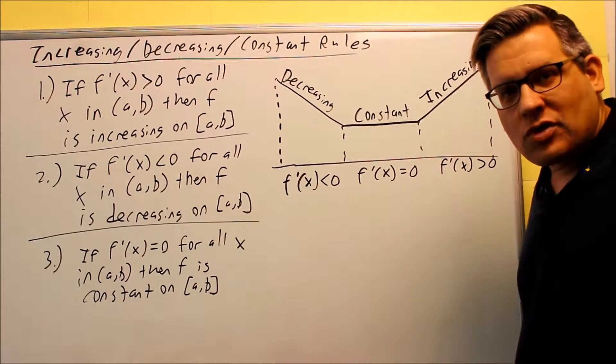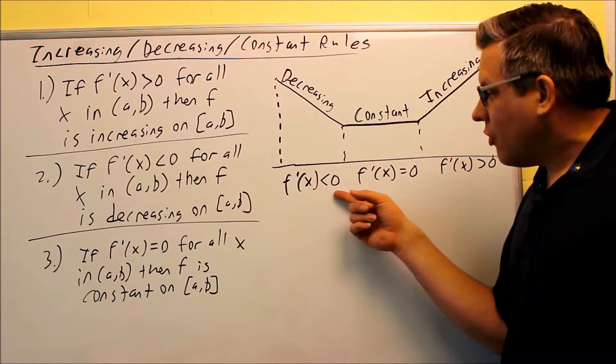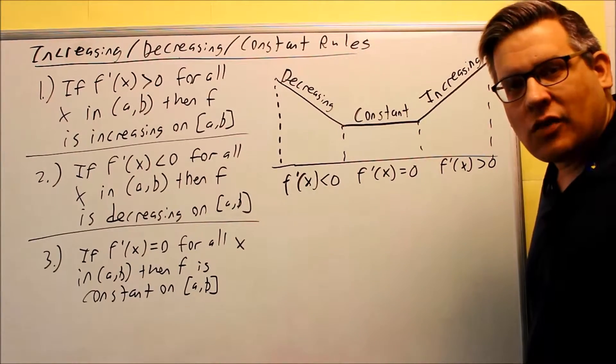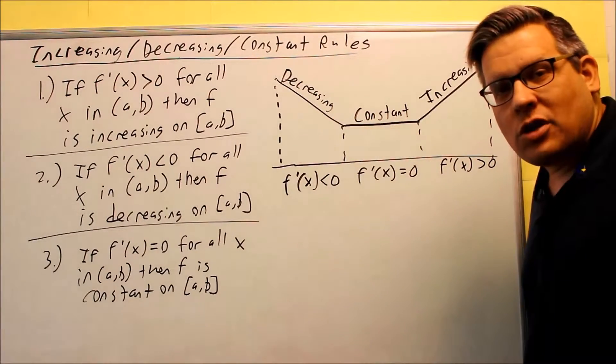And since we know that the derivative is the same thing as slope, if the derivative is less than zero, that's a way you can indicate it has a negative slope and we automatically know it's going to be decreasing there.